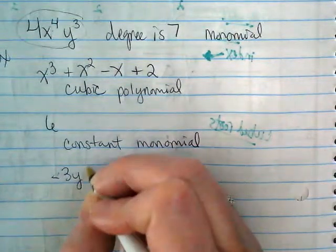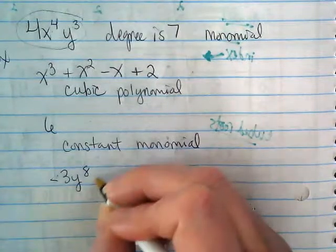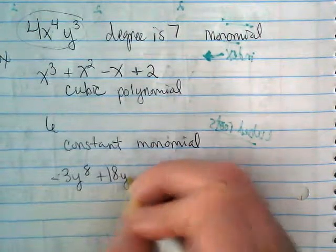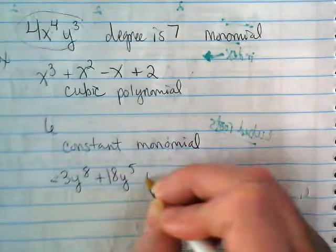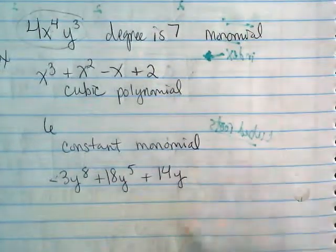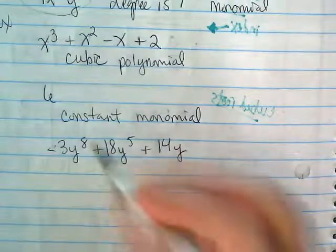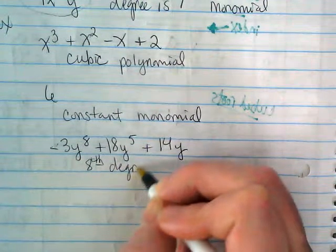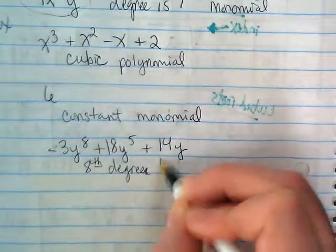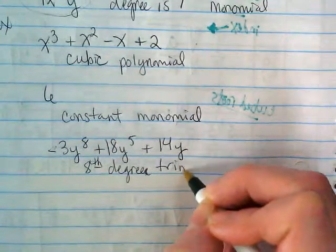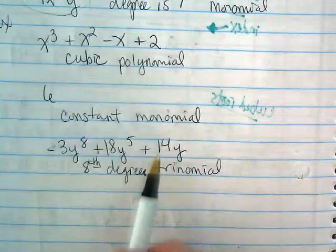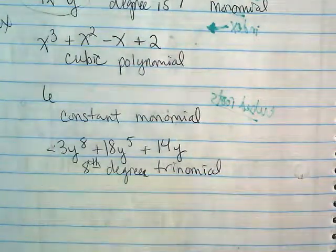How about negative 3y to the eighth plus 18y to the fifth plus 14y? The eighth. Eighth degree. We'd say eighth degree. And how many terms? One, two, three. Polynomial. Because it has how many terms? One, two, three.